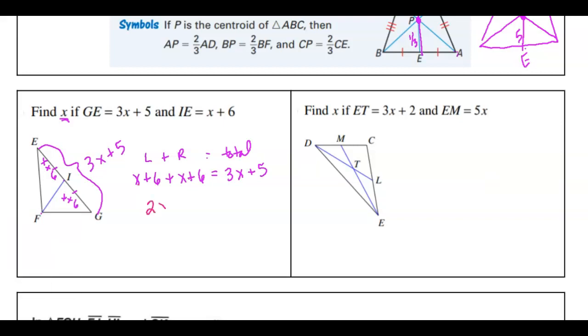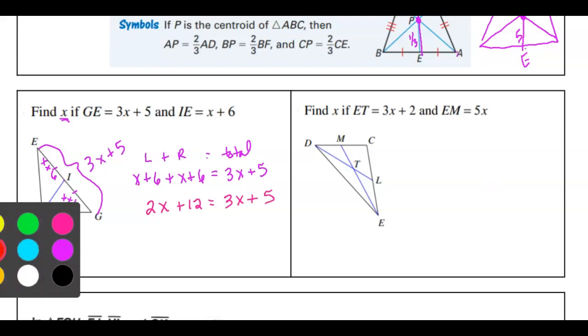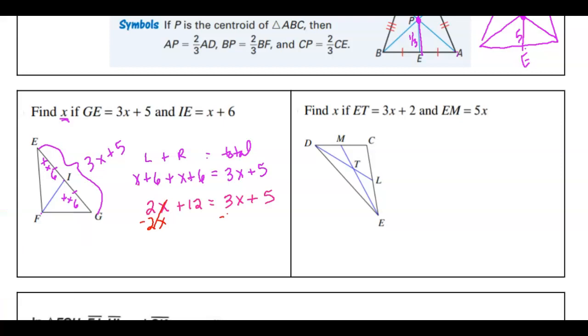So X plus X, 6 plus 6. And then we'll go ahead and subtract 2X, 12 equals 1X plus 5, and so subtract 5, so X equals 7. And since that's all they were looking for, then we're done. So that used the median concept.